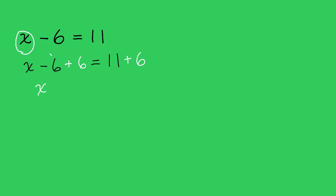So we'll have x, and these negative and positive 6 will cancel, and then we'll have 11 plus 6, and that gets to 17. Okay, good. We solved the equation.